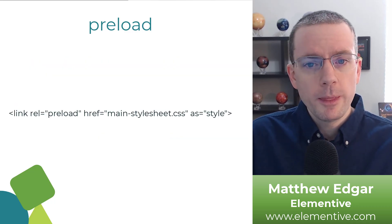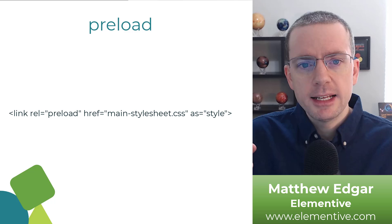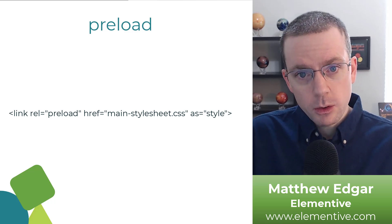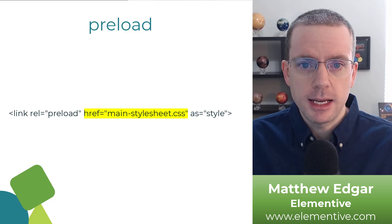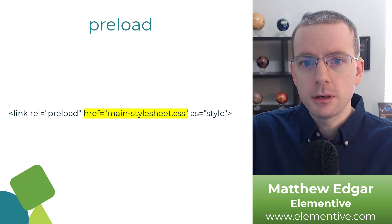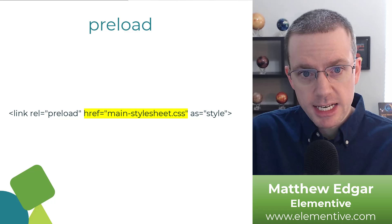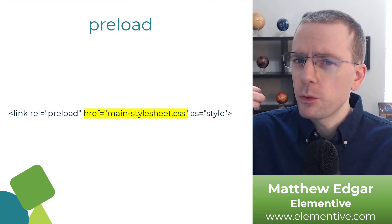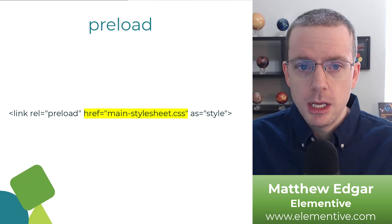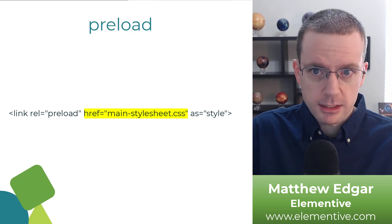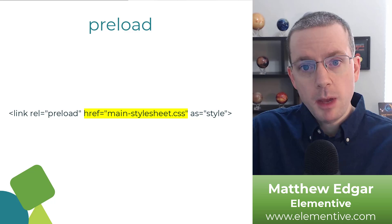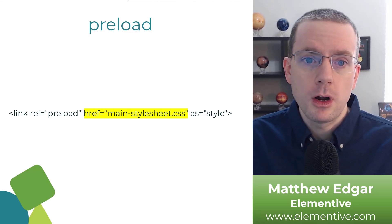Here's an example of the code for preload — this will preload the main stylesheet.css. This link tag is telling the browser to treat that main-stylesheet.css with really high priority when loading it on the page. In that case, it makes sense. This is our CSS file and we want to make sure that gets loaded so the page can render appropriately for our visitors.